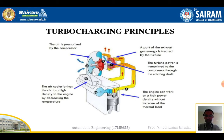Now the working — the turbocharging principle: first, the air is pressurized by the compressor. Second, the intercooler brings the air to a high density to the engine by decreasing its temperature. Third, part of the exhaust gas energy is treated by the gases in the turbine. The turbine power is transmitted to the compressor through the rotating shaft — what energy we get in the turbine is passed into the compressor, which compresses the air and sends it to the engine cylinder.